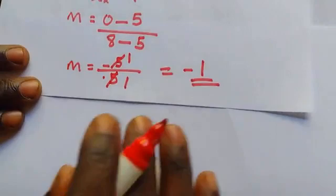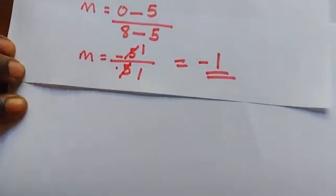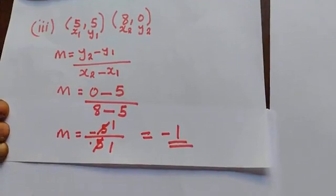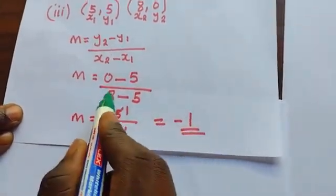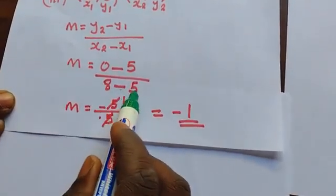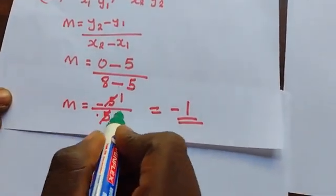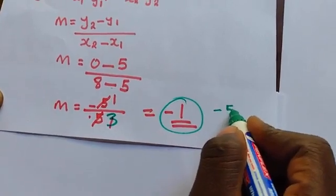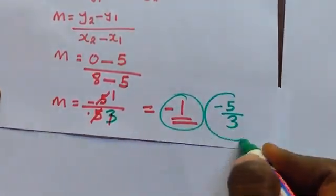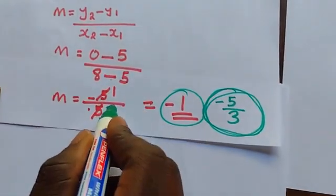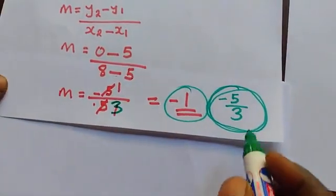So we get m equal to 0 minus 5, which is negative 5, over 8 minus 5. Now I need to correct a mistake — 8 minus 5 is not 5 as I said earlier; it's supposed to be 3. So the value of the gradient will change. We have negative 5 over 3. So our gradient is equal to negative 5 over 3. Take note of that correction.